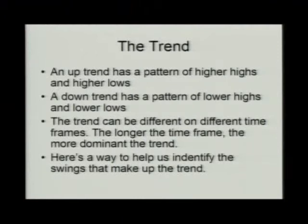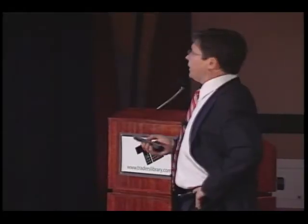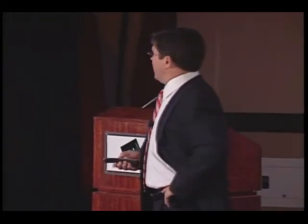The trend — an uptrend, as we all know — has a pattern of higher highs and higher lows. A downtrend has a pattern of lower highs and lower lows. The trend can be different on different time frames. I have a friend who's written voluminously on markets, and he says every market is always trending on every time frame. And now that we can look at so many different time frames, we can certainly see that.